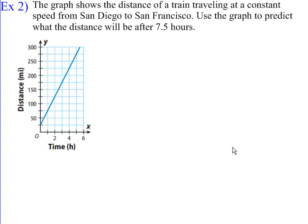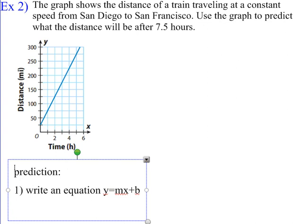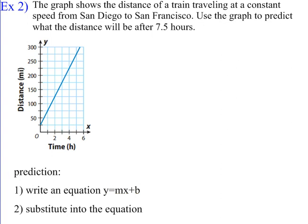Now let's take a look at another problem here. And this says the graph shows the distance of a train traveling at a constant speed from San Diego to San Francisco. Use the graph to predict what the distance will be after seven and a half hours. Well, we're going to do once again, we're making a prediction. So we're going to type up a few little steps over here when we make a prediction. The first thing we need to do when we make a prediction is we want to write an equation. Remember when we write an equation, we are thinking y equals mx plus b. And once we write that, our second step is going to be to substitute into the equation. So those are our two steps. We're going to predict, write an equation y equals mx plus b, and then we're going to substitute into the equation.